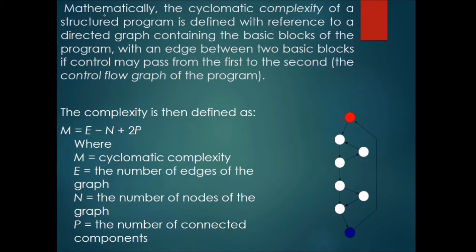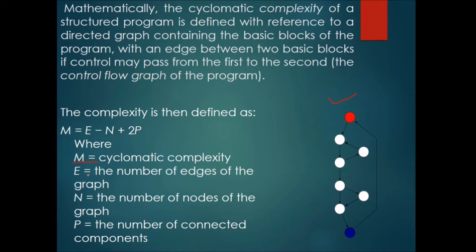Mathematically, the cyclomatic complexity of a structured program is defined with reference to a directed graph containing the basic blocks of the program, with an edge between two blocks if control may pass from the first to the second. The complexity is defined as M = E − N + 2P, where E is the number of edges, N is the number of nodes, and P is the number of connected components. Generally, P is taken as 1.